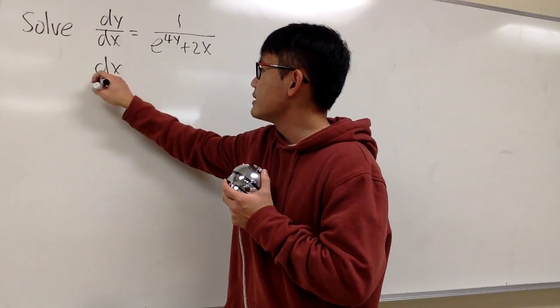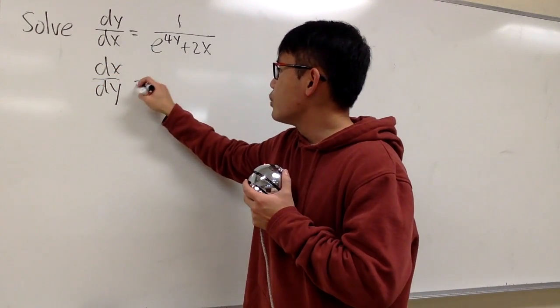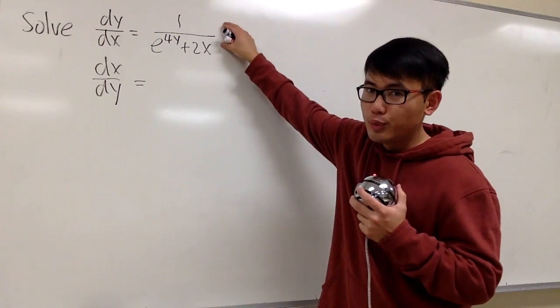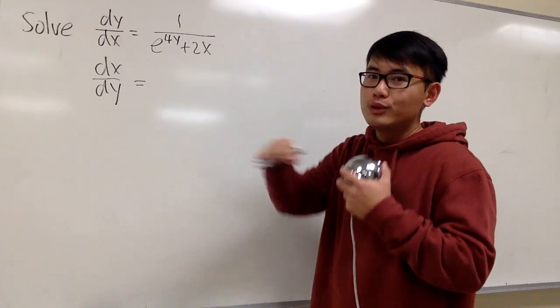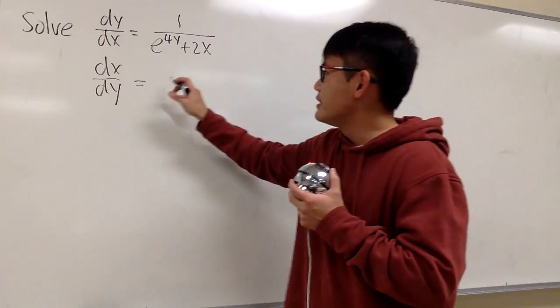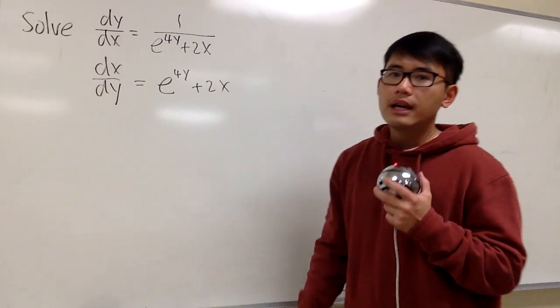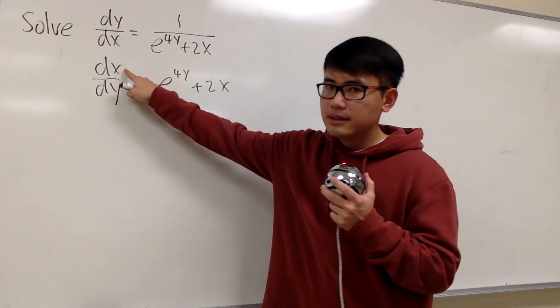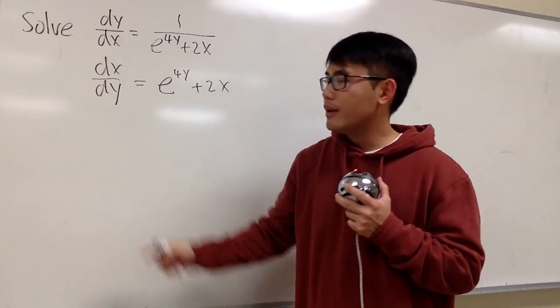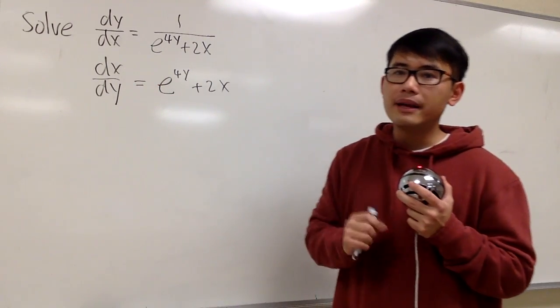On the left-hand side, we will have dx/dy, and this will be, I'll take this and put it on the numerator, and over 1, which the over 1 doesn't matter. I'll just write this down as e^(4y) and then we have plus 2x after that. And now you can see x is the dependent variable, and y is the independent variable.